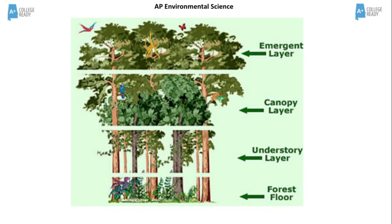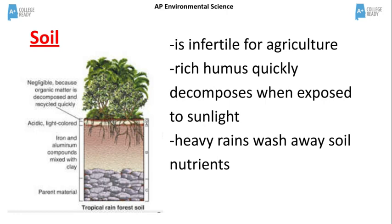The soil in the tropical rainforest is infertile because the humus that forms quickly decomposes when exposed to light. Heavy rains may also wash away the soil nutrients. In the soil profile, notice the very thin top layer and relatively shallow root systems.